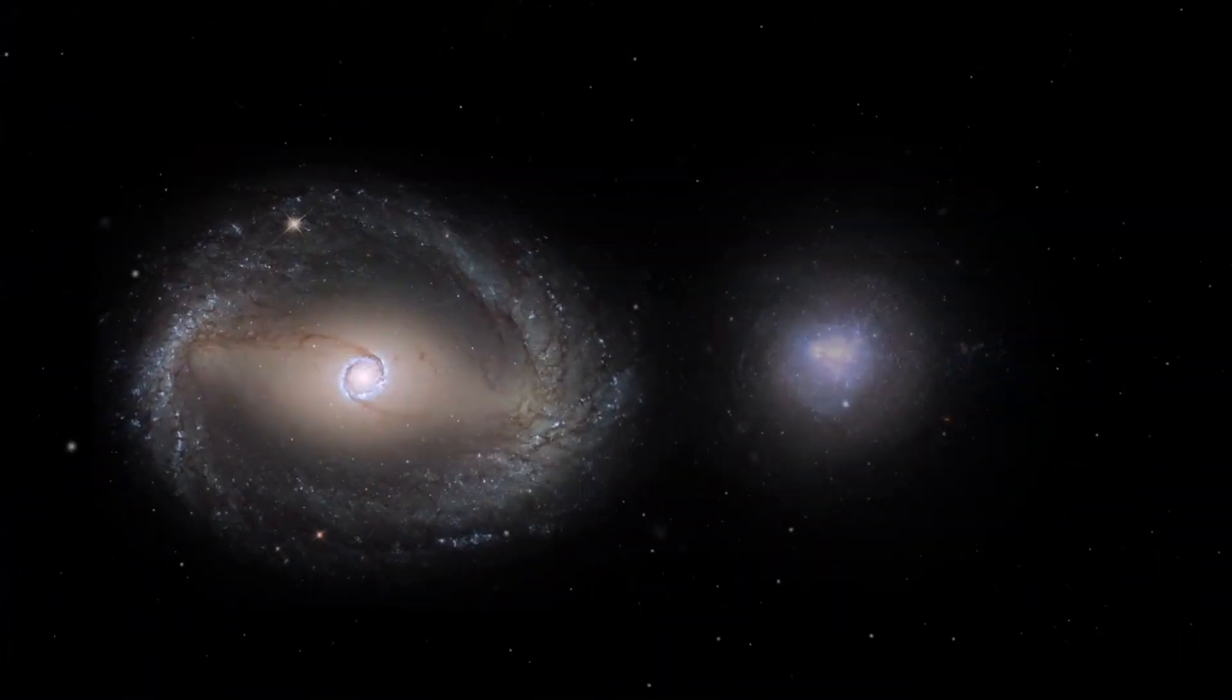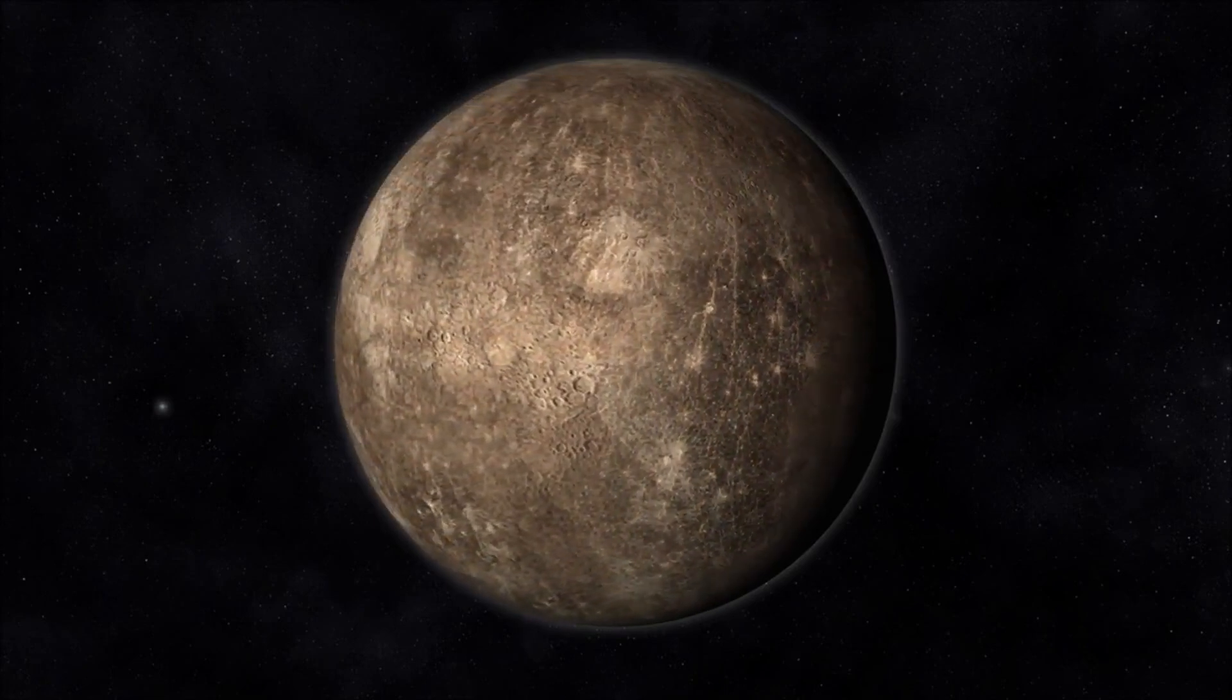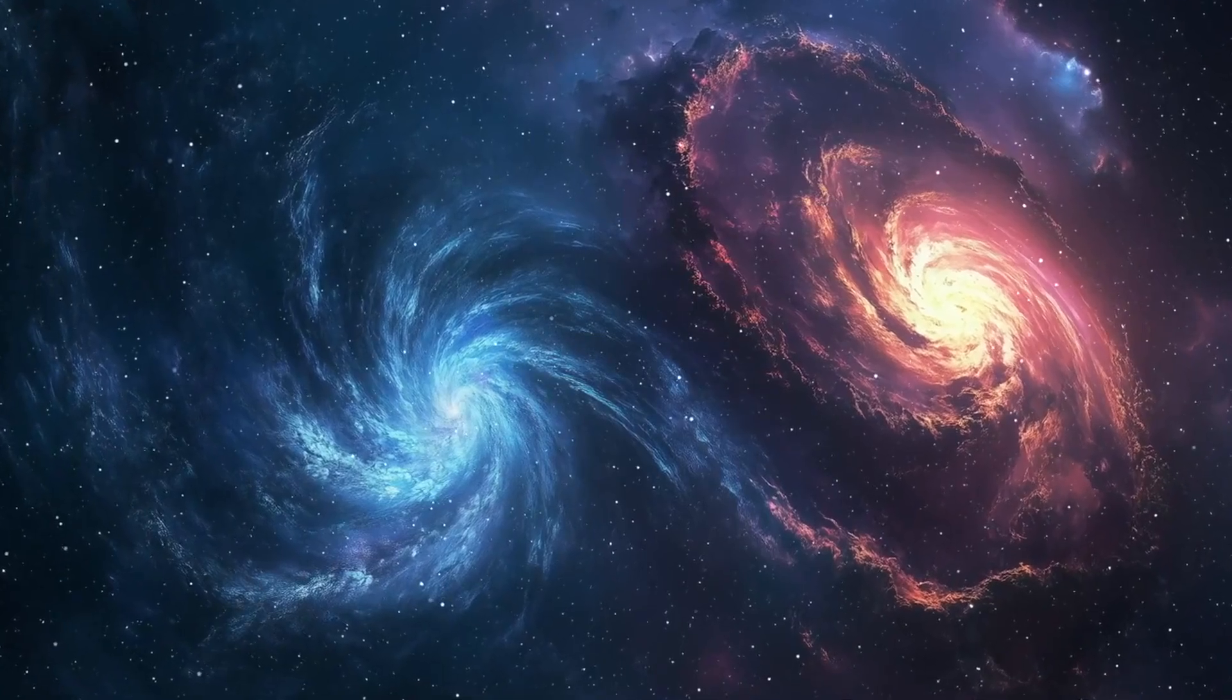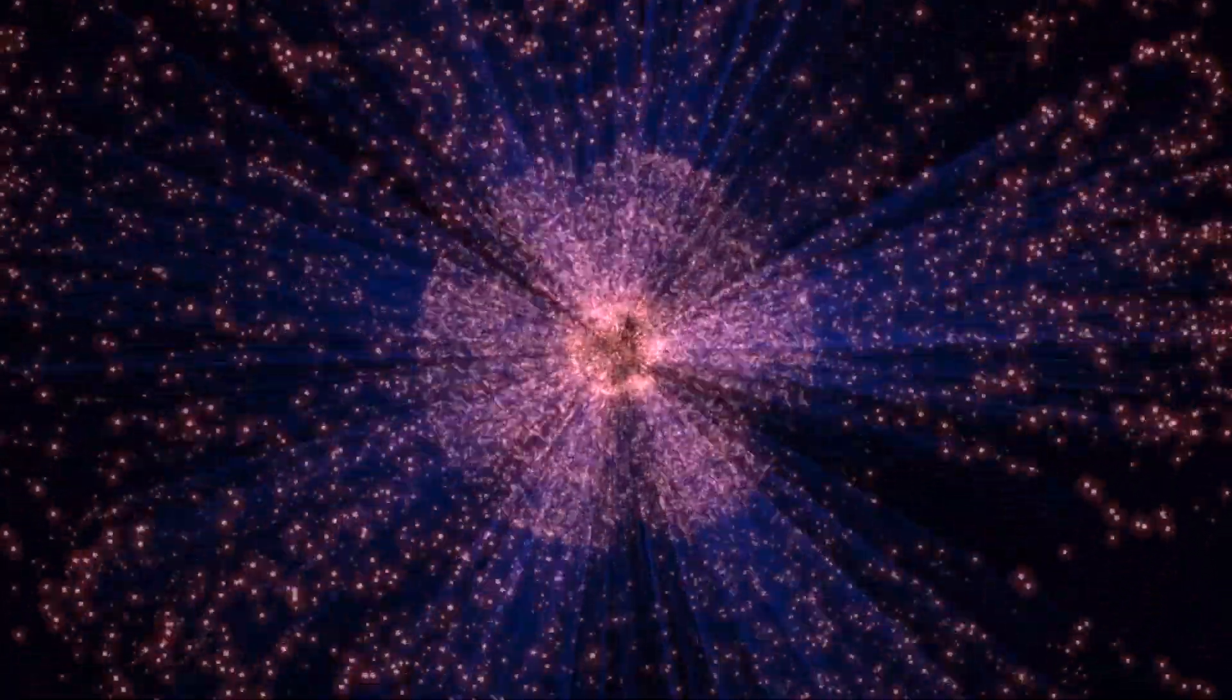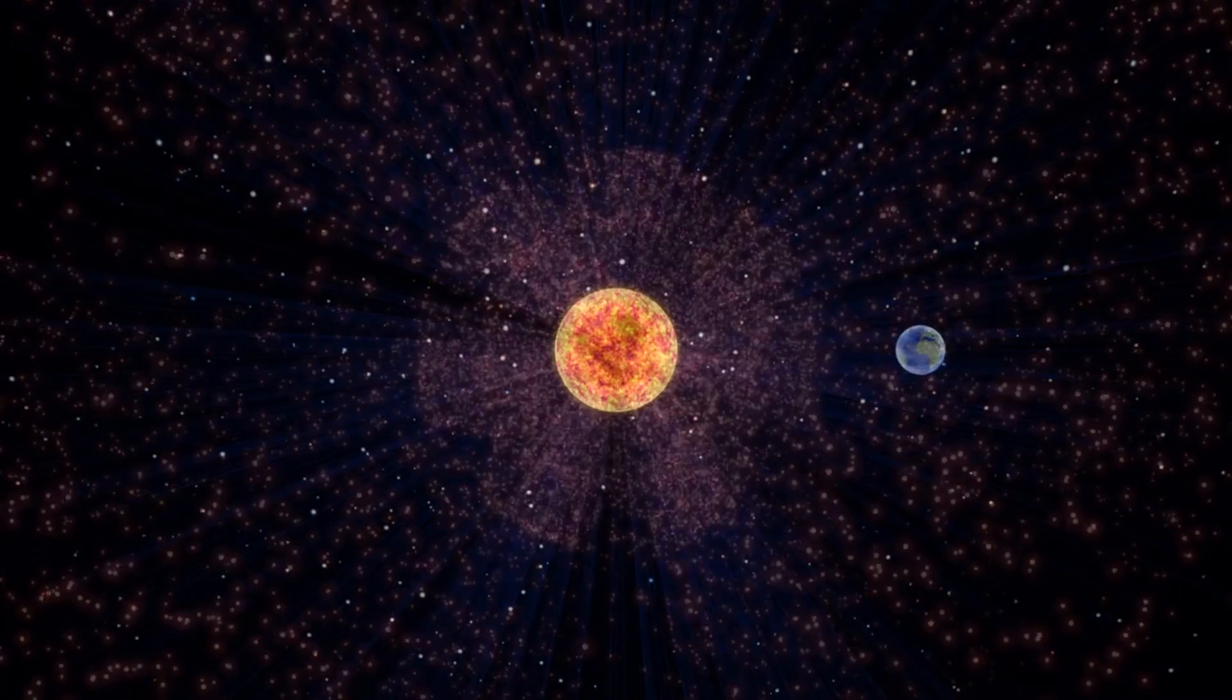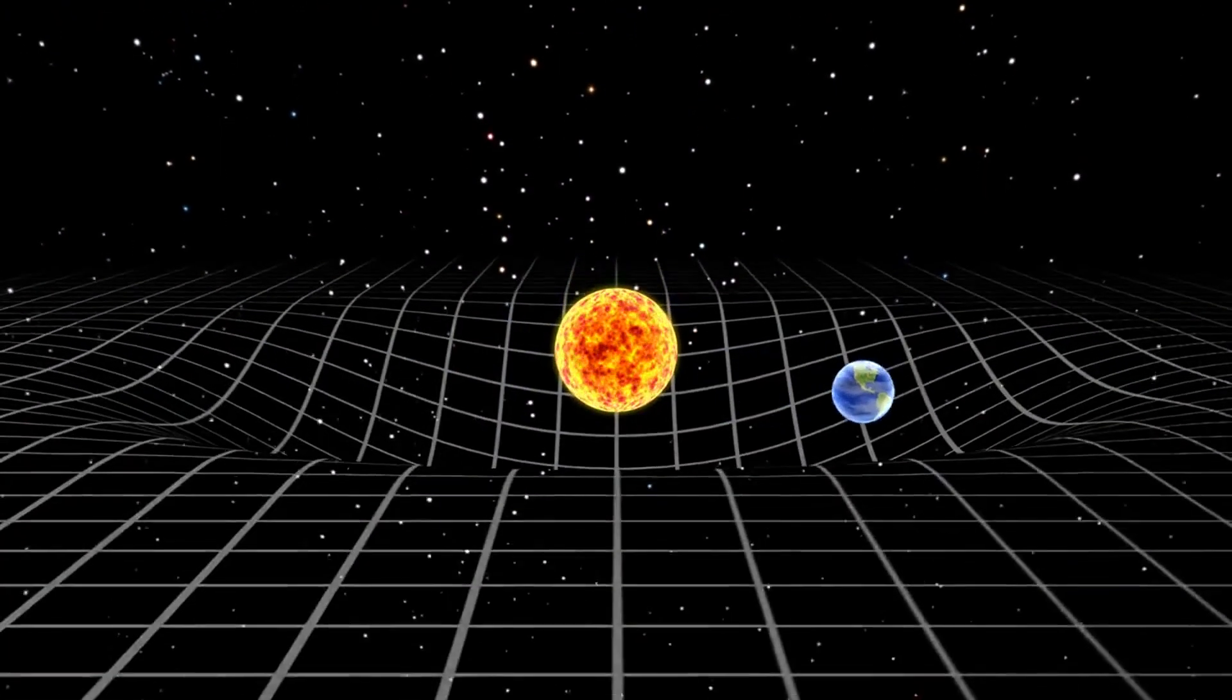So could this actually happen? Could Mercury and Venus collide in a dramatic, solar system-altering event? The truth is, the answer isn't as clear as we'd like to think. While it seems unlikely in the near future, the vast timescales of the universe mean that nothing is ever completely ruled out. Even the slightest shift in the gravitational forces at play could change everything.